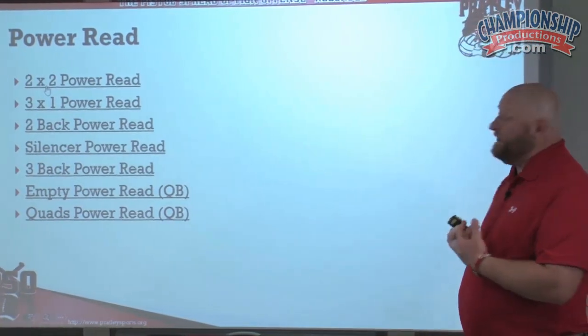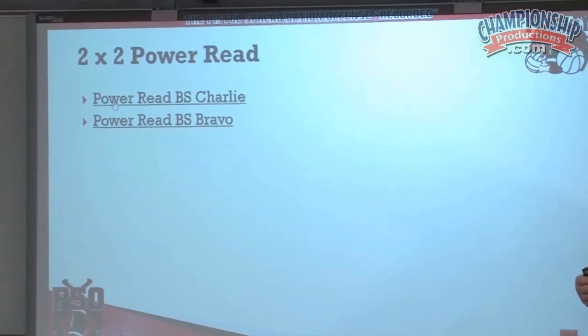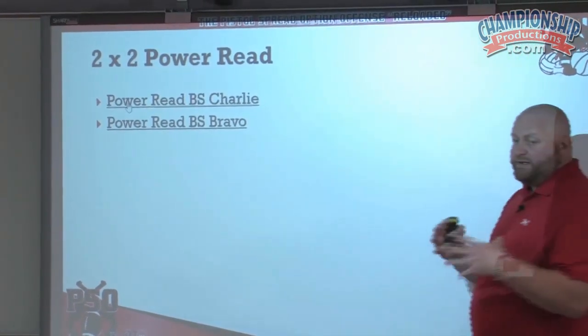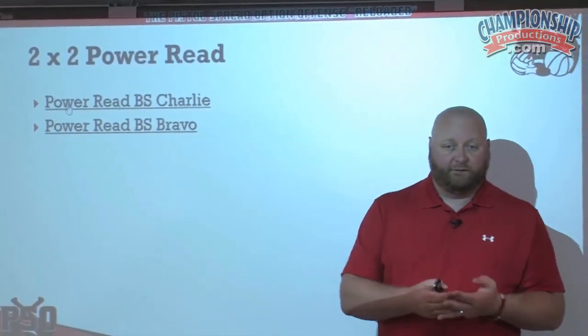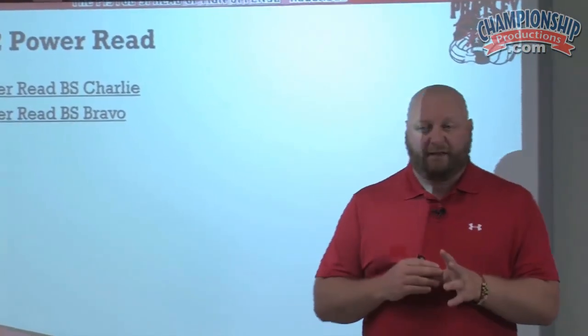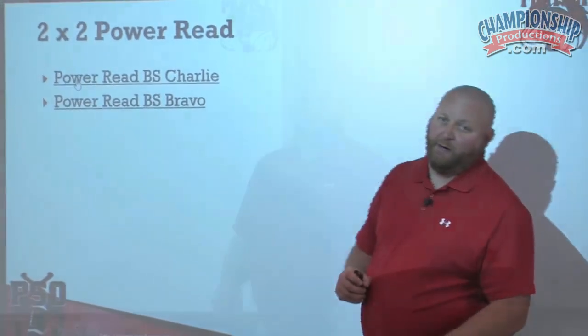Because our base is a two-by-two, we're going to start teaching power read out of the two-by-two. If you're familiar with the read system as we used in our zone scheme, we are going to read Charlie, Bravo, and Alpha — just a quick rehash of what that means. If we want to read the C-gap defender we say read Charlie; B-gap defender, read Bravo; A-gap defender, read Alpha. With power we don't read Alpha — Alpha is off limits. It's just Charlie and Bravo that we read with power.